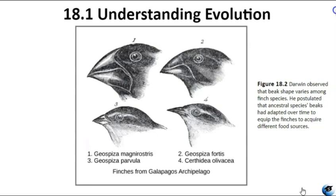And Darwin wasn't the only scientist who studied the Galapagos finches. Peter and Rosemary Grant observed changes in beak shape distribution among the medium ground finch population on the Galapagos island of Daphne Major across generations, from 1978 through 1987. During a period of increased rainfall caused by El Niño, large hard seeds became harder to find, favoring the survival and reproduction of small-billed birds that could only feed on the abundant small, softer seeds. As a result, the average bill size decreased in subsequent generations.